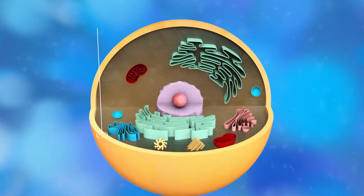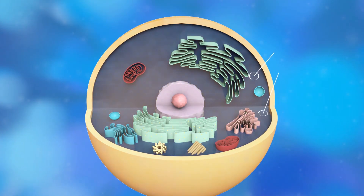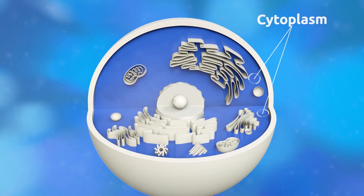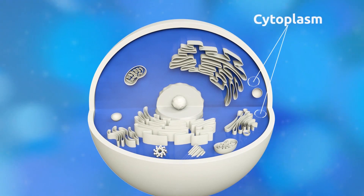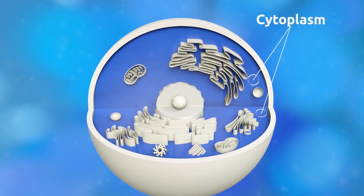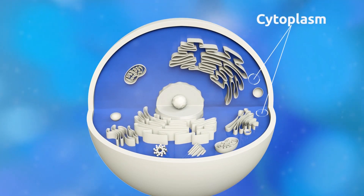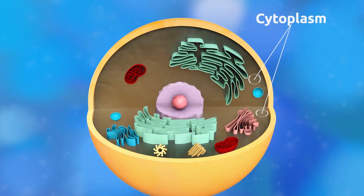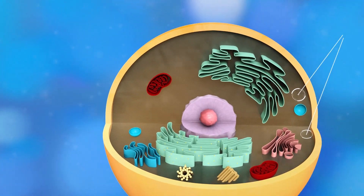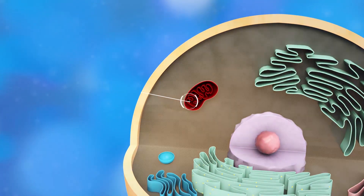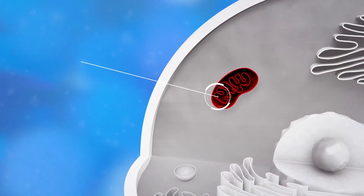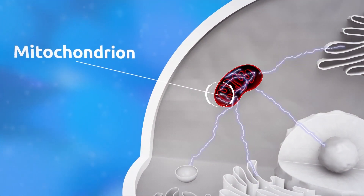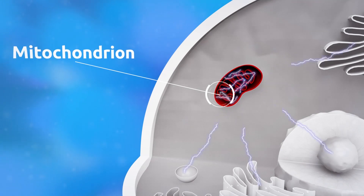The cytoplasm is a thick solution found inside the membrane. Organelles are located in the cytoplasm. A mitochondrion is the organelle in charge of producing the energy in the cell.